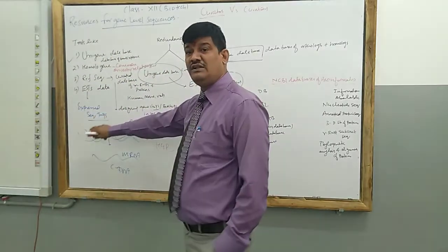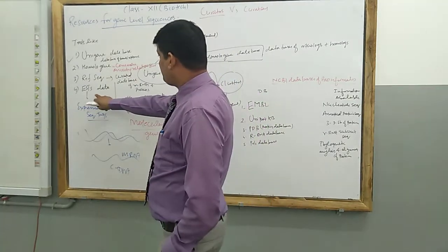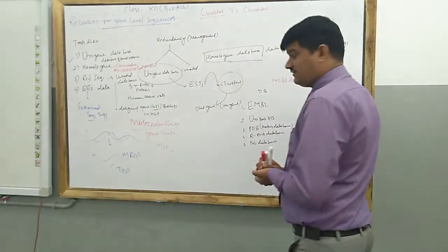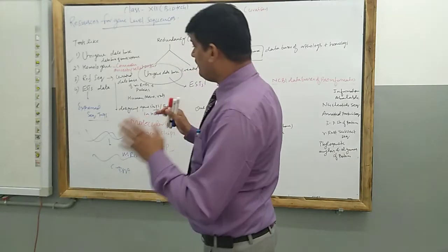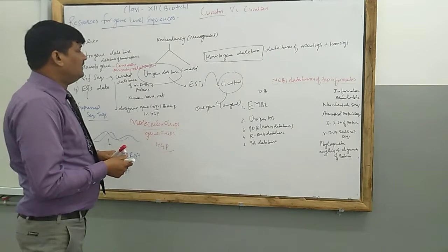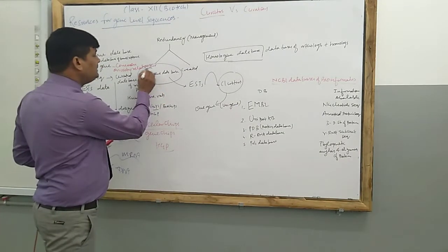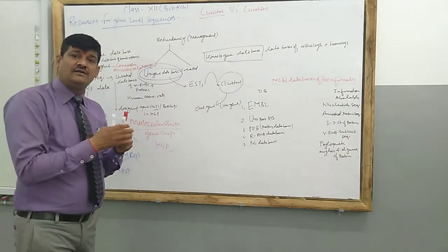It is denoting the functional part of the gene, and this expressed sequence tag data is in redundant database - redundant means surplus or extra. How can we manage the EST data or that management? This is converted or done by the Unigene database.